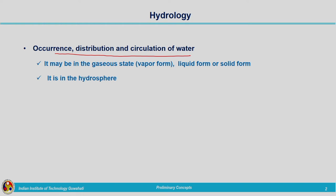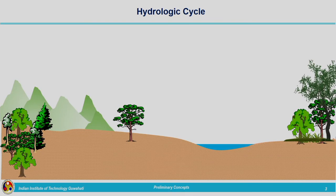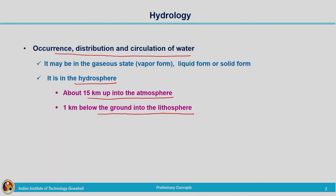The space where water is present is termed as the hydrosphere. The hydrosphere extends about 15 kilometres up into the atmosphere and 1 kilometre below the ground surface, that is into the lithosphere. So a total of 16 kilometres is termed as the hydrosphere. Within this sphere, water is present in different states: vapour state, liquid state, and solid state.